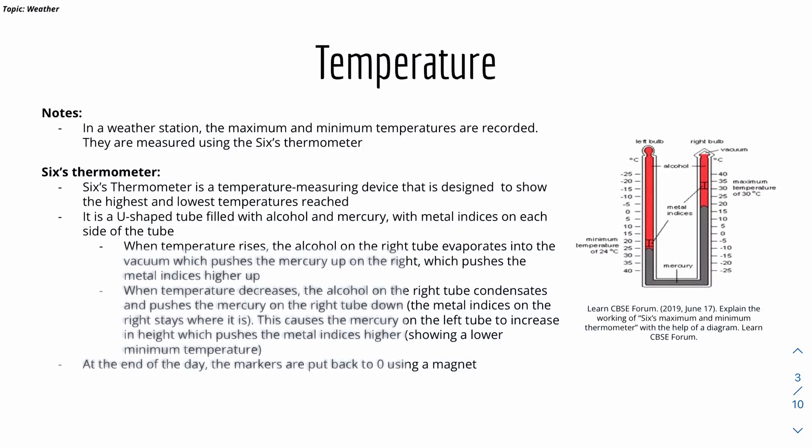We'll start with temperature. In the weather station, the maximum and minimum temperatures are recorded using this thing called a Six's thermometer, which is shown on the right here. This is a temperature measuring device that is designed to show the highest and lowest temperature reached every day.